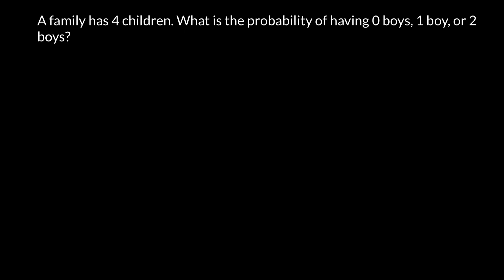Here's the problem: a family has four children. What is the probability of having zero boys, one boy, or two boys? First I want to show you how we approach these problems using the logic method. Each empty box here would stand for a child, and this family has four children.